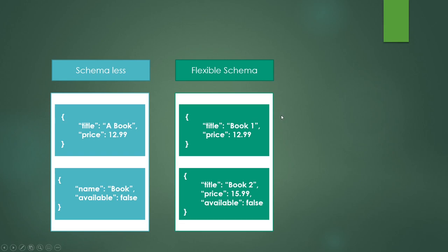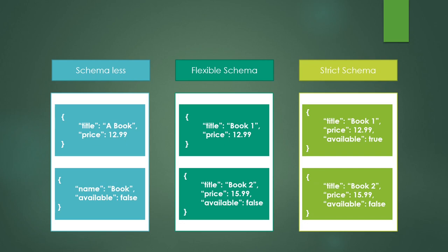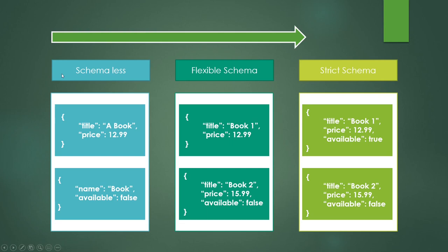The next approach is the strict schema approach. This follows a more SQL-world approach where all documents have exactly the same schemas containing all the same fields. Going from schemaless all the way to strict schema is increasingly like a SQL approach. Which approach do you use? This is completely up to you and your application needs. MongoDB gives you complete freedom to structure your data any way you like. For real-world applications, I would recommend the flexible schema or strict schema as a better choice.